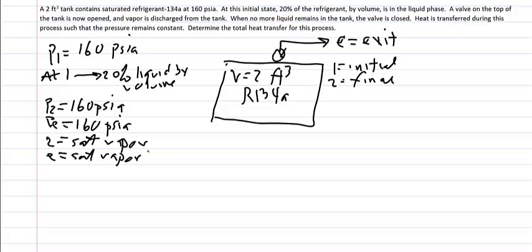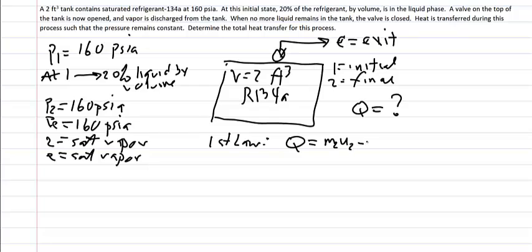We know a lot about this system. We are trying to find the total amount of heat transfer. To solve for heat transfer, we use the first law. For a discharge problem, the first law tells us that Q equals M2·U2 minus M1·U1, plus the exit mass times the enthalpy at the exit. If we can determine all three thermodynamic states and the masses, we can find the heat transfer.